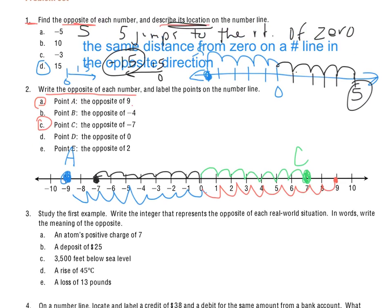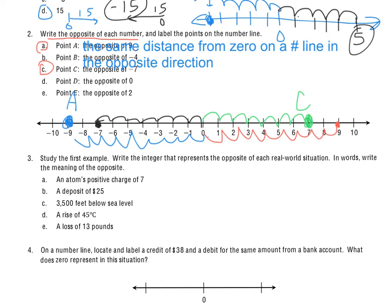Moving on, let's take a look at 3B. I'll look at specifically, but we need to read the directions first. Study the first example. Write the integer that represents the opposite of each real-world situation. In words, write the meaning of the opposite. So I'll take a look at B. A deposit of 25. So if I deposit 25, the integer is 25. So I need to write the integer that represents its opposite.